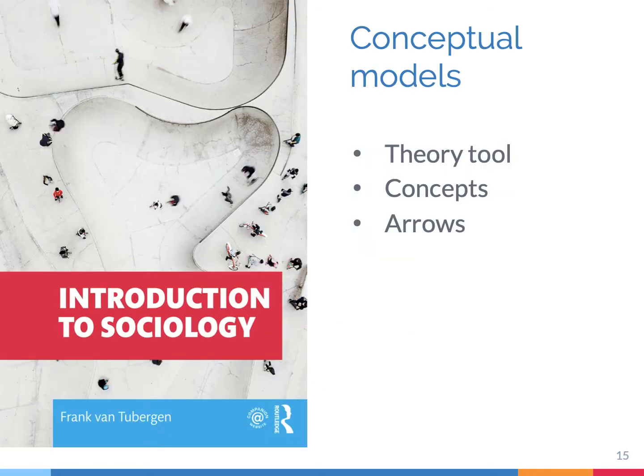Sociologists use theory tools to present theories in a systematic, scientific way. They use a theory schema, a formal model, and a conceptual model. Conceptual models focus on the key concepts of the theory, and they visualize the relationships between these concepts using arrows. It's a very useful theory tool, particularly when theories are complex and have many concepts. So make sure you have this one in your toolbox — it will help you to think like a sociologist.